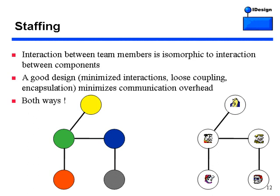It took me a long while to realize it goes both ways. If you have a good design on the whiteboard and assign it to Fred and Barney, and Fred doesn't talk to Barney because they don't like each other, that area in your design is going to be weak. When you assign work to developers, make sure you take into account the intra-team interactions and put developers who work well together on more coupled components.